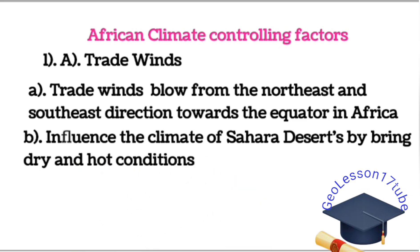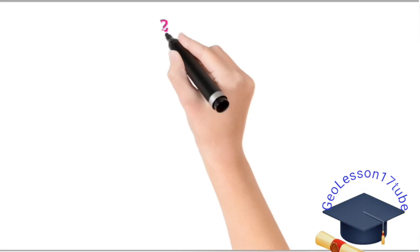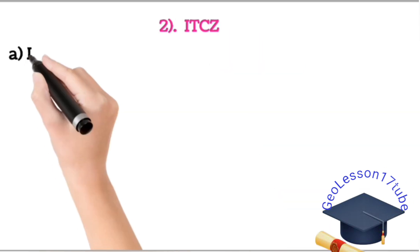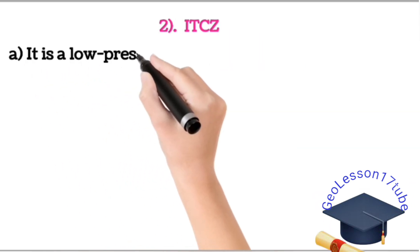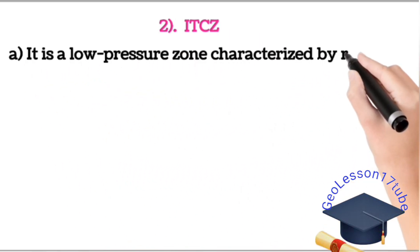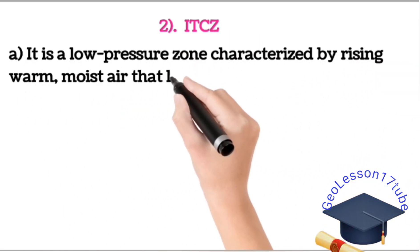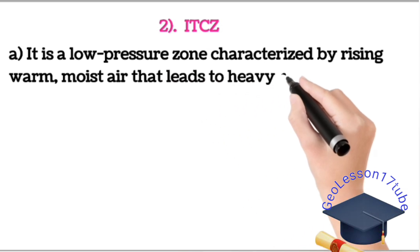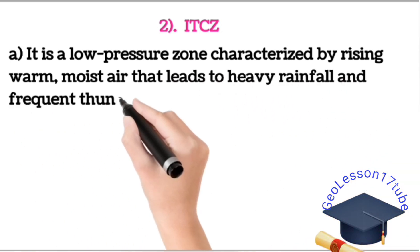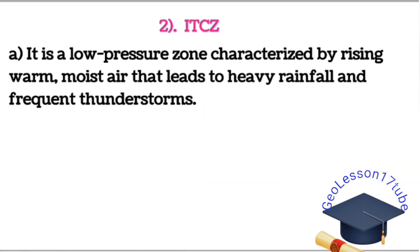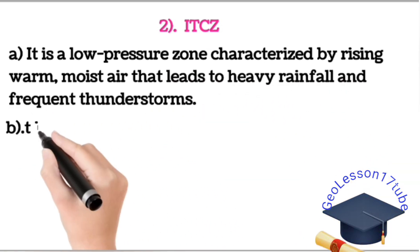Trade winds also influence the climate of the Sahara and other desert regions, keeping them dry. This trade wind influences the climate of the Sahara Desert by bringing dry and hot conditions. ITCZ is a low-pressure zone characterized by rising warm, moist air that leads to heavy rainfall and frequent thunderstorms.